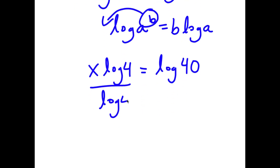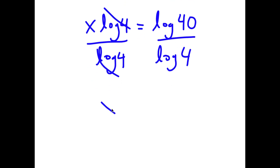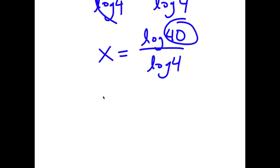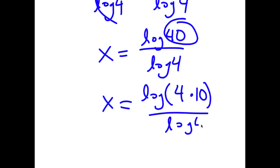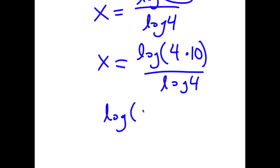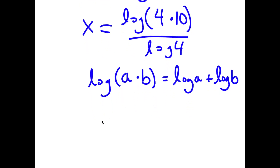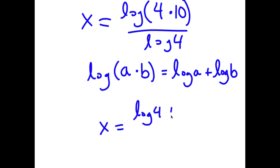I'm going to divide both sides by log 4 to isolate x. These two log 4s cancel out, and I'm left with x is equal to log 40 over log 4. Now I can rewrite log 40 as log of 4 times 10. If I have something in the form log of a times b, this equals log a plus log b. So log(4 times 10) gives log 4 plus log 10 over log 4.